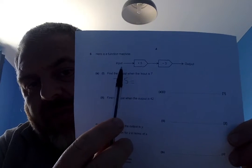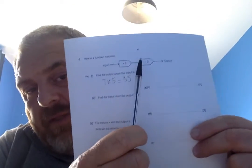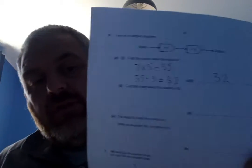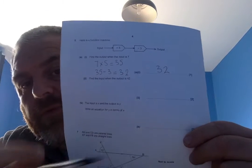So the first thing I'm going to do is to do the first stage. That is, my input is 7. So 7 times 5 gives me 35. Whatever the value is at this stage, I'm going to take 3 off. So my output is going to be 35 minus 3. So, my output is going to be 32.